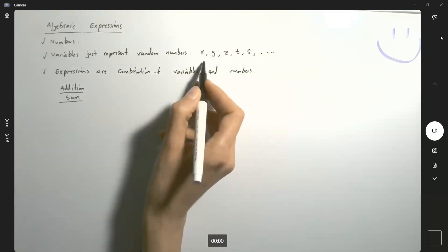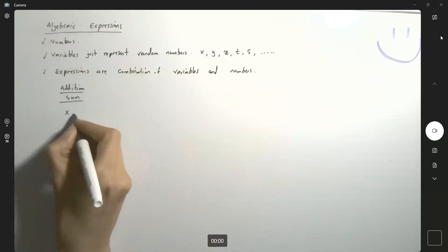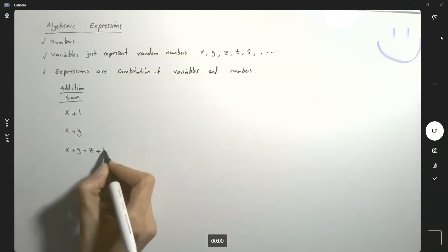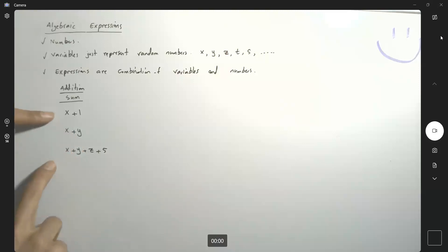X plus a random number. X plus one. X plus another variable, y. X plus y plus z plus five. You can just keep going. There is no stopping. You can create as many expressions as you like.